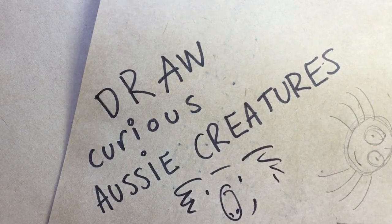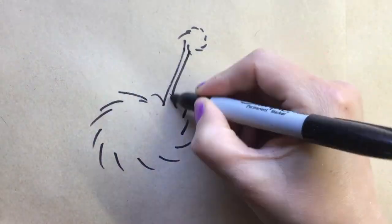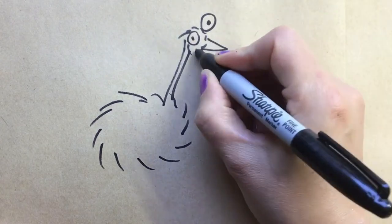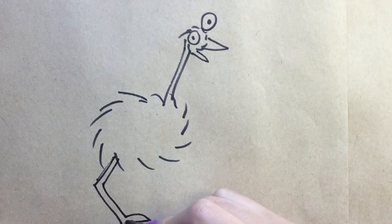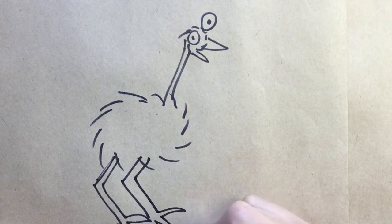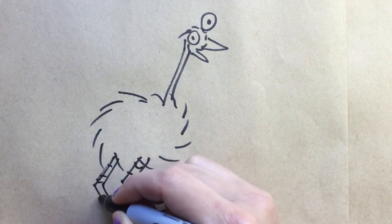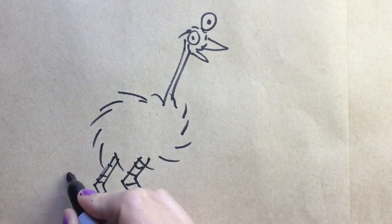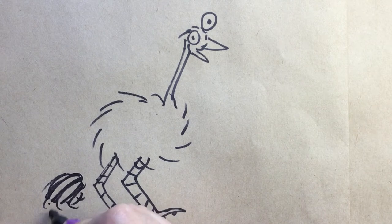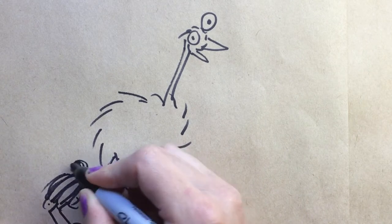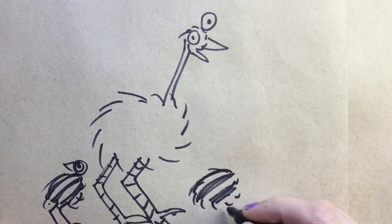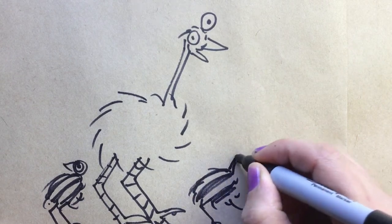Draw curious Aussie creatures. Emus are two fluff balls with silly legs that go backwards like all birds. I like to draw little lines like Big Bird. Emu chicks are so stripy and their legs can go everywhere - you can have them dancing around.